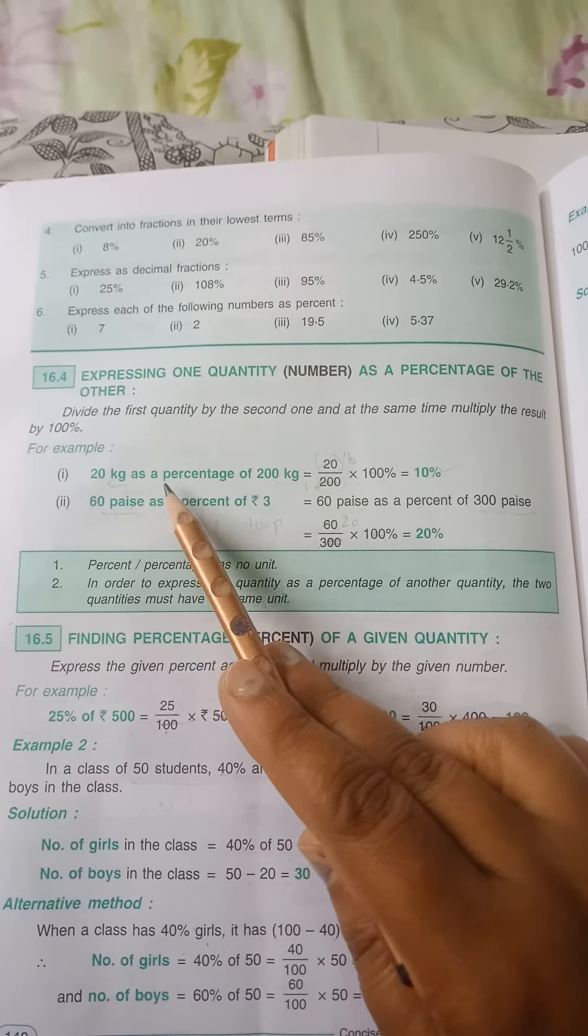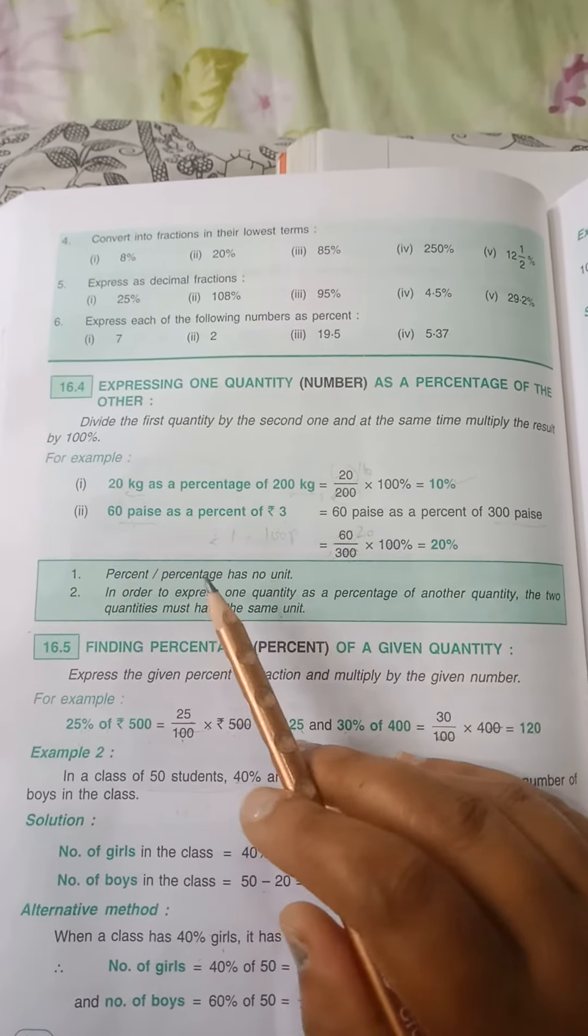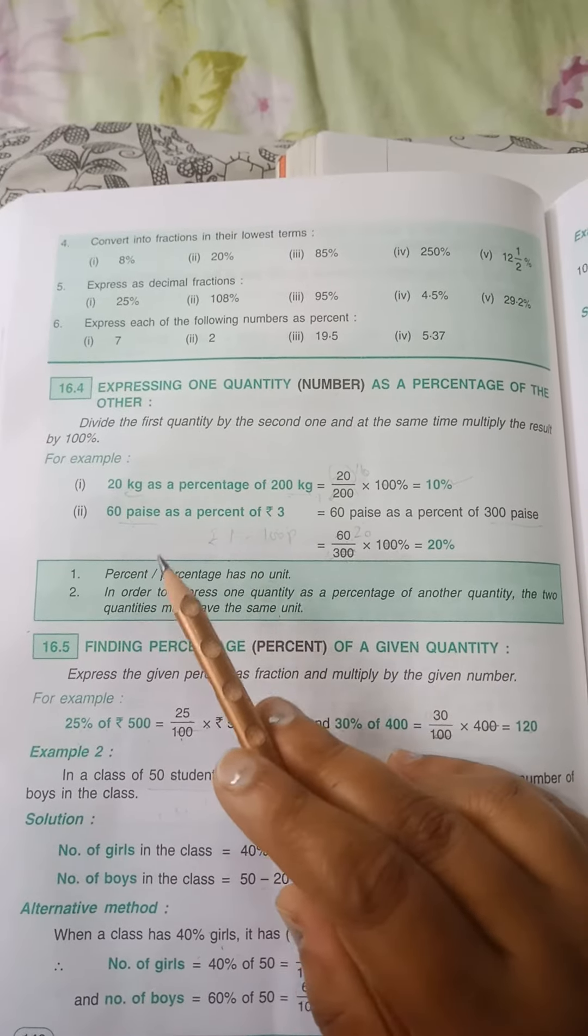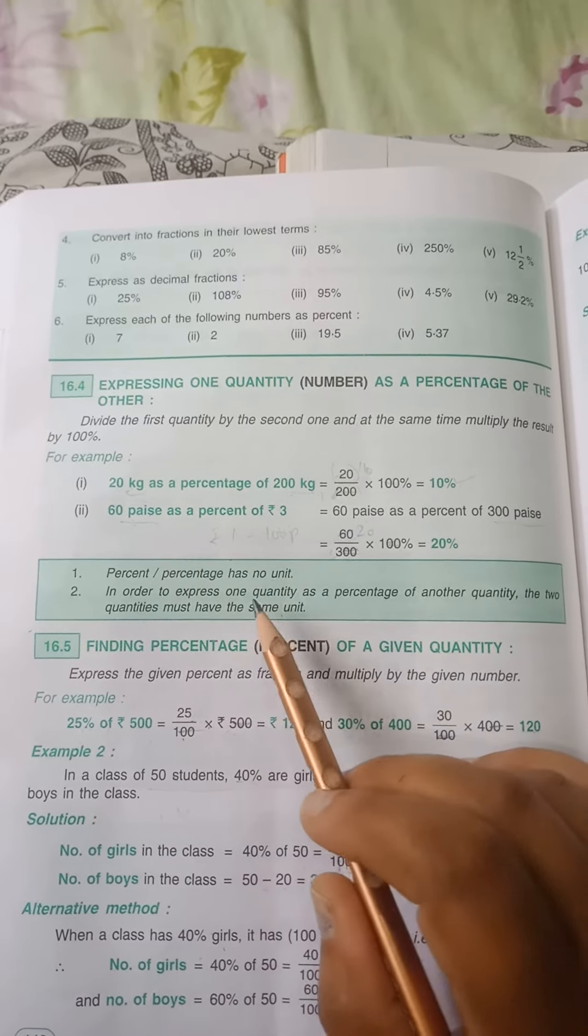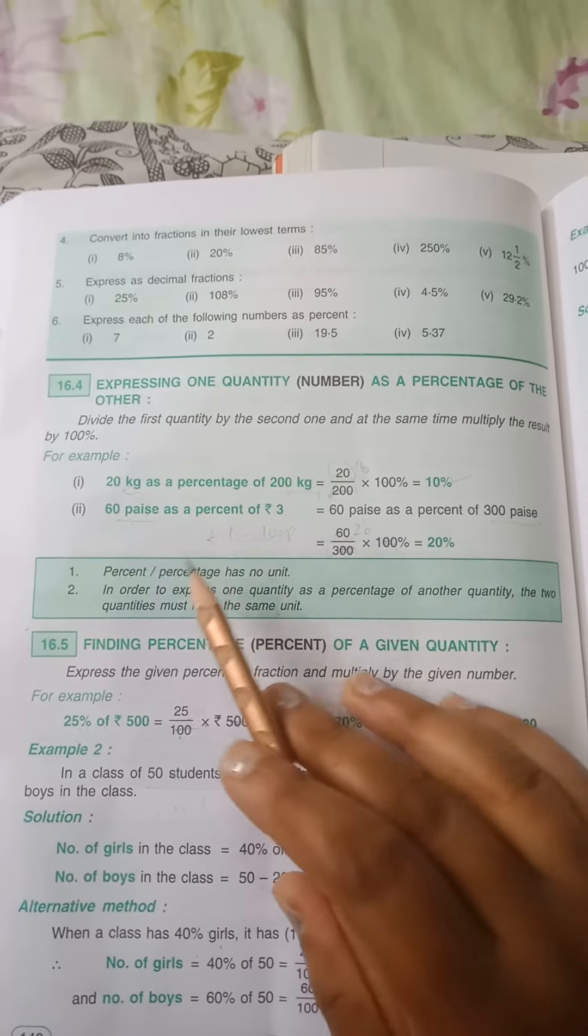First example is 20 kg as a percentage of 200 kg. And one more thing children, remember in percentage we don't have units, but in order to express one quantity as a percentage of another quantity, the two quantities must have the same unit.